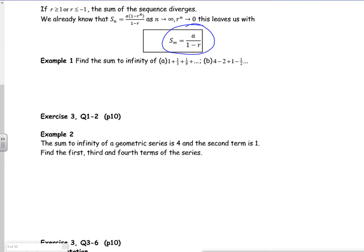Right, let's have a look then. So it says find the sum to infinity for a. Right, so a is one. Now if you look, I'm multiplying by a third, so r is a third. So my sum to infinity is a over one minus r. So my sum to infinity is one over one minus a third. So my sum to infinity is one over two thirds. So my sum to infinity is one and a half. That's quite nice.